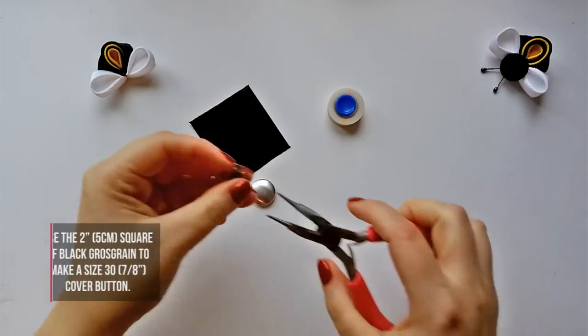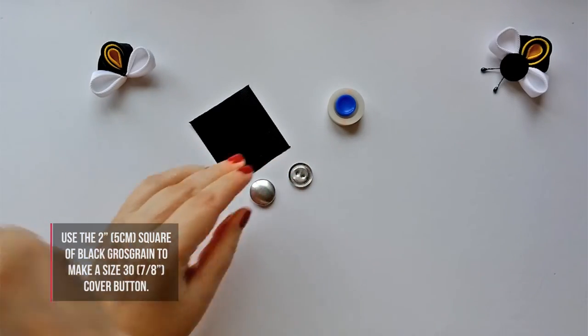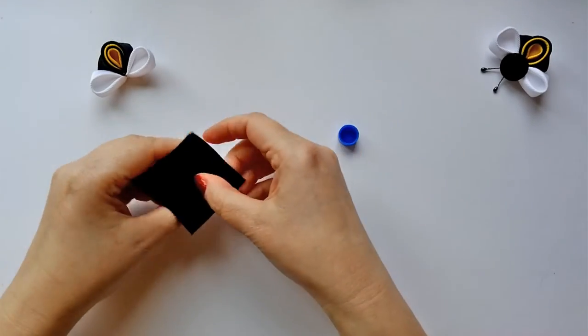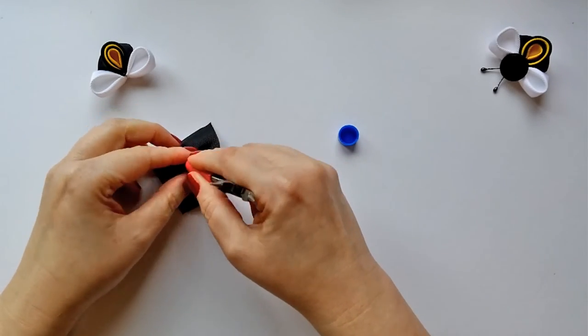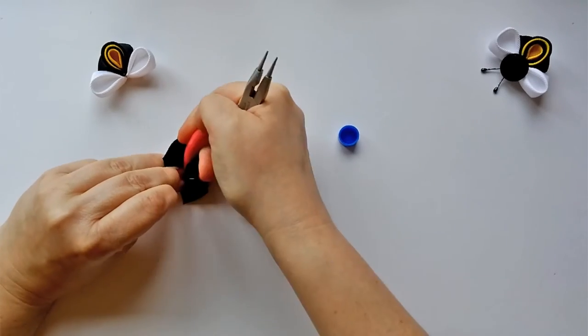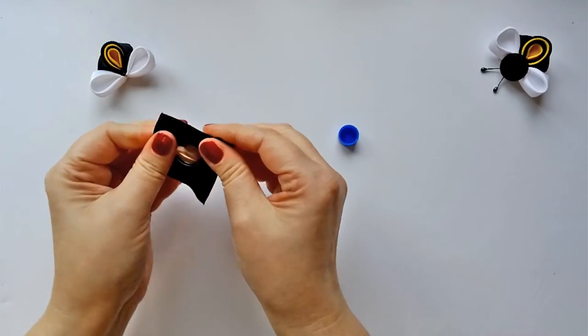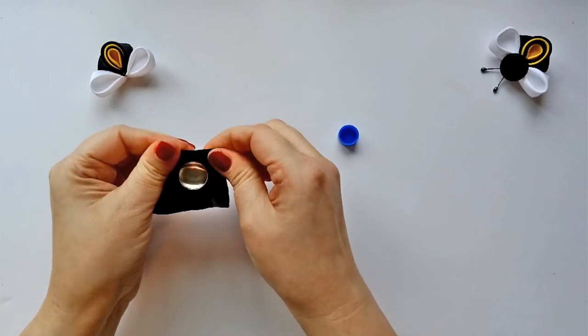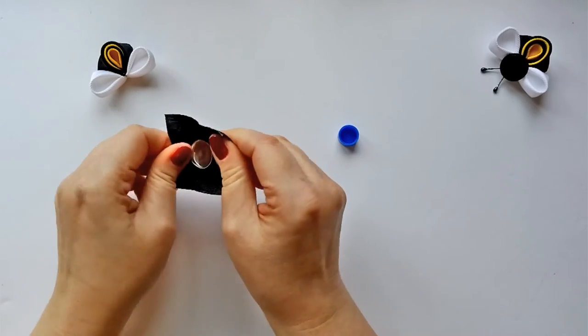With your cover button kit, use your pliers to remove the wire loop from the back of the button. Then take your two inch or five centimeters square black grass grain and place it on top of the tool. Then place the top of the button curved part down and push it into the tool. I find with grass grain it can be really hard to snap it into the tool so I use the bottom of my pliers to really push it in. Then just pull the ribbon to make sure there's no creases or anything caught and it's nice and even.